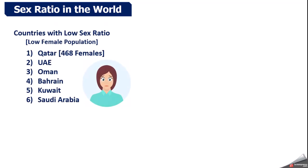Now we will talk about sex ratio in the world. There are some countries where the proportion of females is very low — Qatar has only 468 females per 1000 males, UAE (United Arab Emirates), Oman, Bahrain, Kuwait, Saudi Arabia. You must have noticed these countries all belong to the Middle East region of Asia — the oil-producing countries.